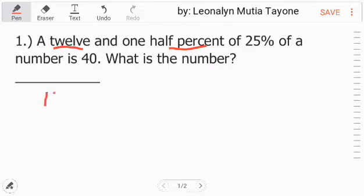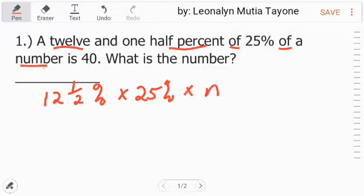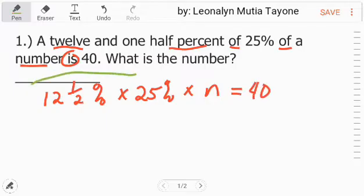Of - multiplication - 25 percent of, let n be our number, is equals, and then 40. This is now our equation.